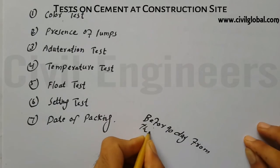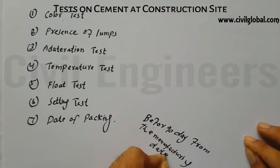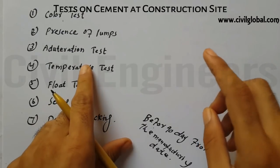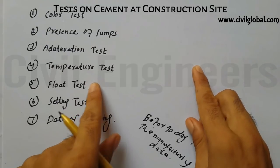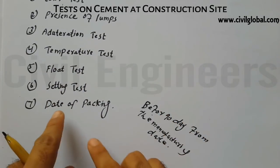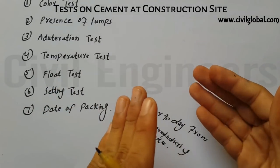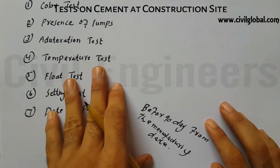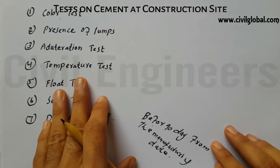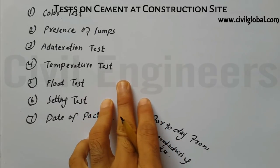The cement should be used before 90 days from the date of manufacturing. If used beyond 90 days, the strength of the cement will automatically reduce and cause problems during construction work. This is the important topic for today — don't forget to like and subscribe. Thank you, all the best, bye.